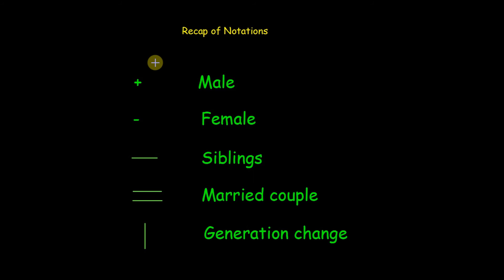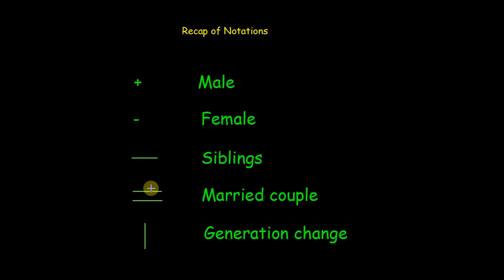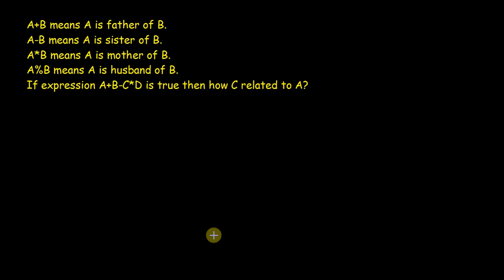Before moving to the first question, let me quickly remind you the notation I prefer: plus for male member, minus for female member, single horizontal line for siblings, double horizontal lines for a married couple, and vertical lines for generation change.